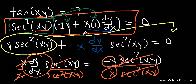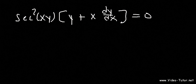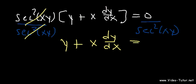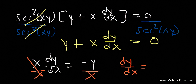Let me show you the easier way. We had secant squared xy times (y plus x dy/dx) equals 0. What we could have done is just divide both sides by secant squared — those cancel — and get y plus x dy/dx equals 0, since 0 divided by anything is 0. So now move y to the other side and divide both sides by x. Therefore dy/dx equals negative y over x.